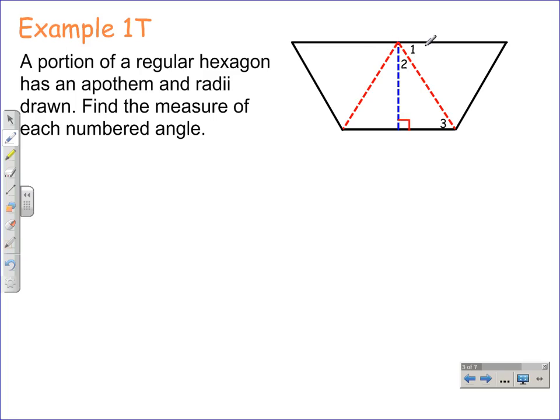That means these interior angles, or the measure of angle one, is going to be equal to 360 degrees divided by six because there's six interior angles on a hexagon. And that'll give us 60 degrees, so the measure of angle one is 60 degrees.